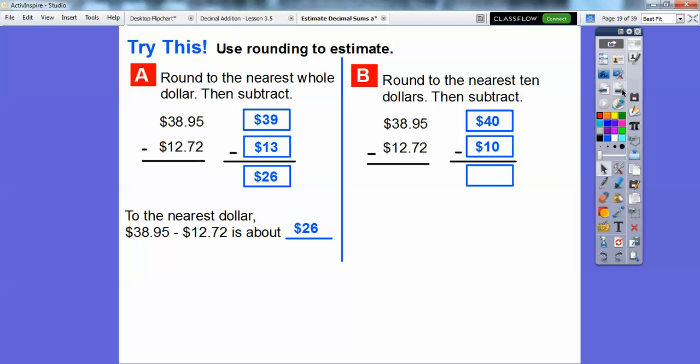So $40 minus $10 is $30. To the nearest $10, $38.95 minus $12.72 is about $30.